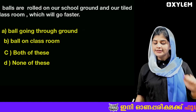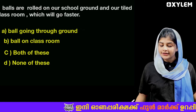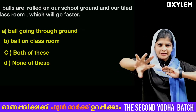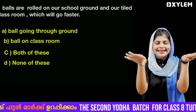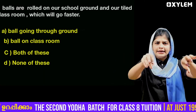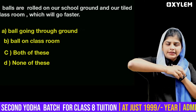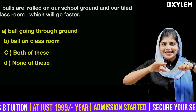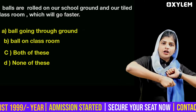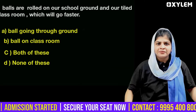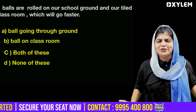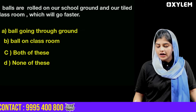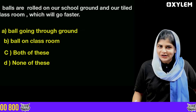Next question: We put two balls — one rolling on our school ground and one in the classroom. Which will go faster? We put the balls on the ground and in the classroom. Here we have four options: A) Ball on the ground, B) Ball in the classroom, C) Both of these, D) None of these.